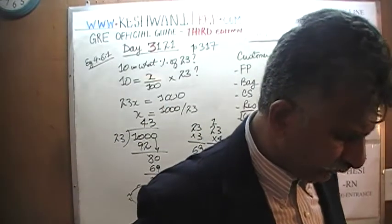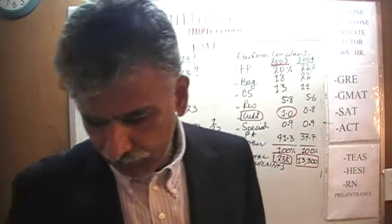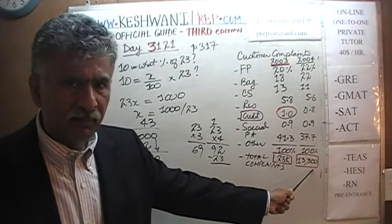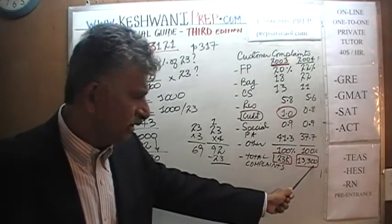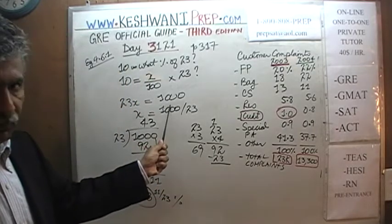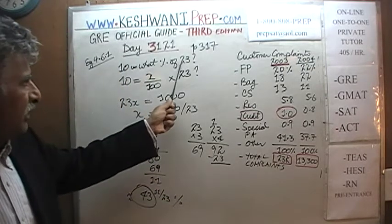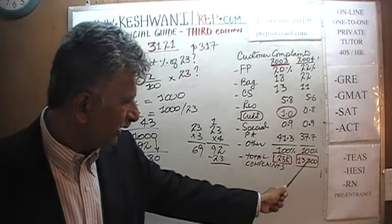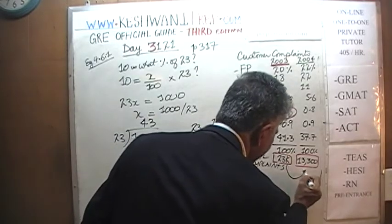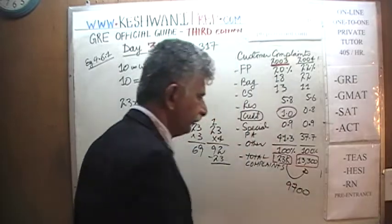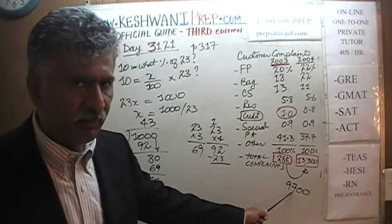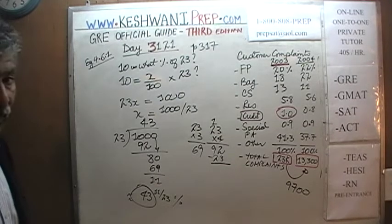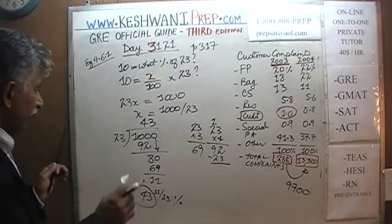In the book they came up with 42%, because they insist on using 13,300 instead of 13,000. If you use 13,300, the difference instead of being 10,000 will only be 9,700. In that case we have to figure out 9,700 is what percentage of 23,000. But 43% is good enough — the extra precision is not necessary.